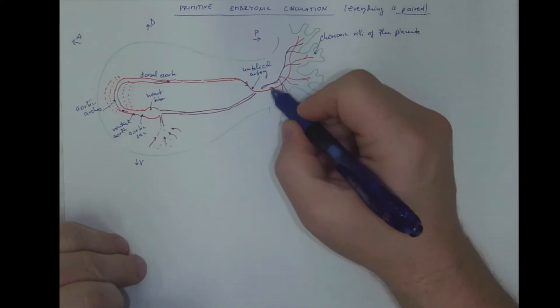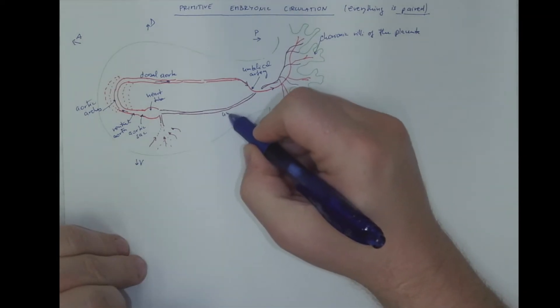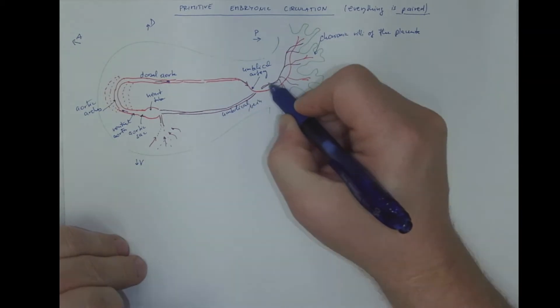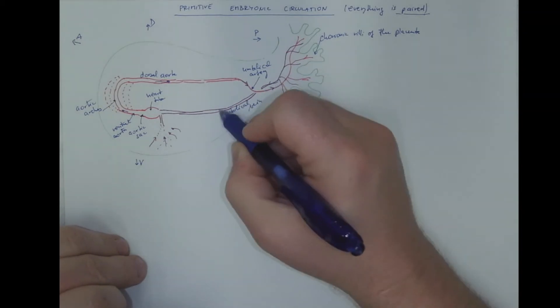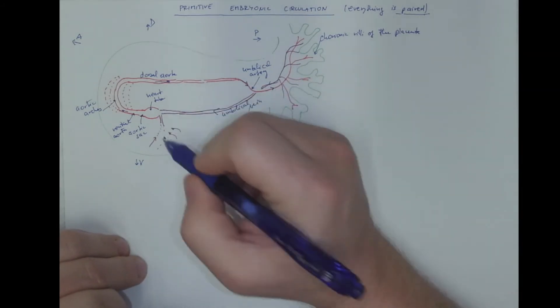The blood comes back via the umbilical vein that brings the blood back to the heart tube.